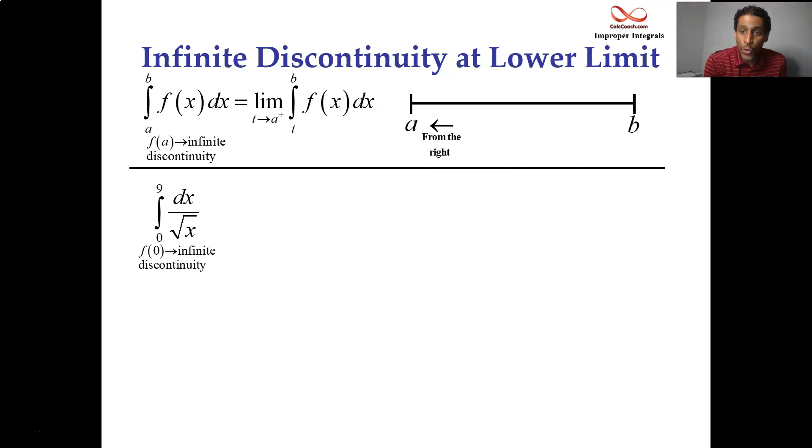All right. So here's our example. Root x is in the denominator. From here on out, we focus our attention on the denominator and we try to figure out where the denominator is zero at. What kind of x causes the denominator to be zero? And for us, for this one, it's when x is equal to zero. And now take a look at the lower limit. And there it is. Zero is the lower limit. Upper limit is nine.